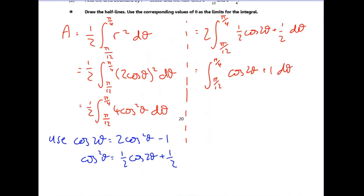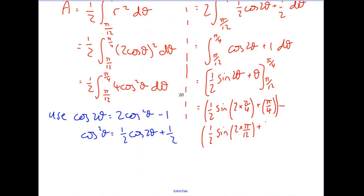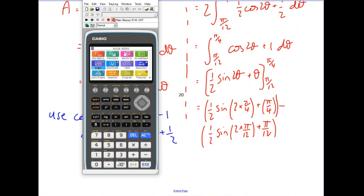It's then a case of integrating this. Integrating cos two theta gives sine two theta, and don't forget to divide by the two. With limits pi over four and pi over 12, we substitute in. So we get: a half sine of two times pi over four plus pi over four, minus a half sine of two times pi over 12 plus pi over 12.